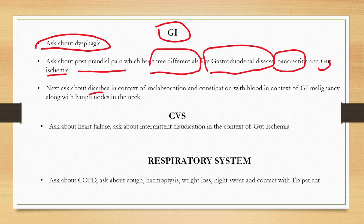Next, ask about diarrhea in the context of malabsorption — how long it has been present — and then ask about steatorrhea and other malabsorption features like bleeding from the gums, purpura, bone pains, and anemia. This will give us a clue whether the weight loss is due to malabsorption or not.